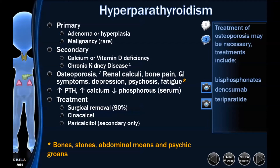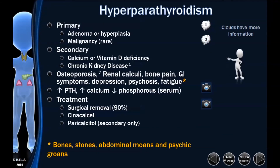Anyone with hyperparathyroidism for a prolonged period can have osteoporosis; treatments may include bisphosphonates, denosumab, or teriparatide, which will be covered in orthopedics. Treatment of the hyperparathyroid state depends on the cause. For primary hyperparathyroidism, surgical removal is the answer 90% of the time. For secondary hyperparathyroidism, address the underlying problem — if it's chronic kidney disease, we look at medications; if it's calcium or vitamin D deficiency, we address those deficiencies.